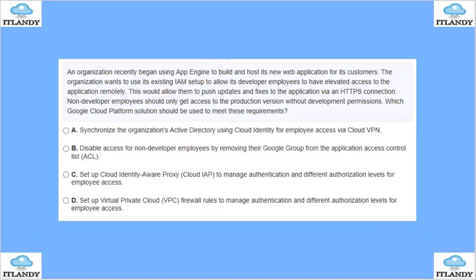An org recently began using App Engine to build and host its own new web application for customers. The org wants to use an existing IAM setup to allow its developer employees to have elevated access to the application remotely. This would allow them to push updates and fixes to the application using HTTPS connections. Non-developer employees should only get access to the production version without additional permissions. Which GCP solution will meet this requirement?